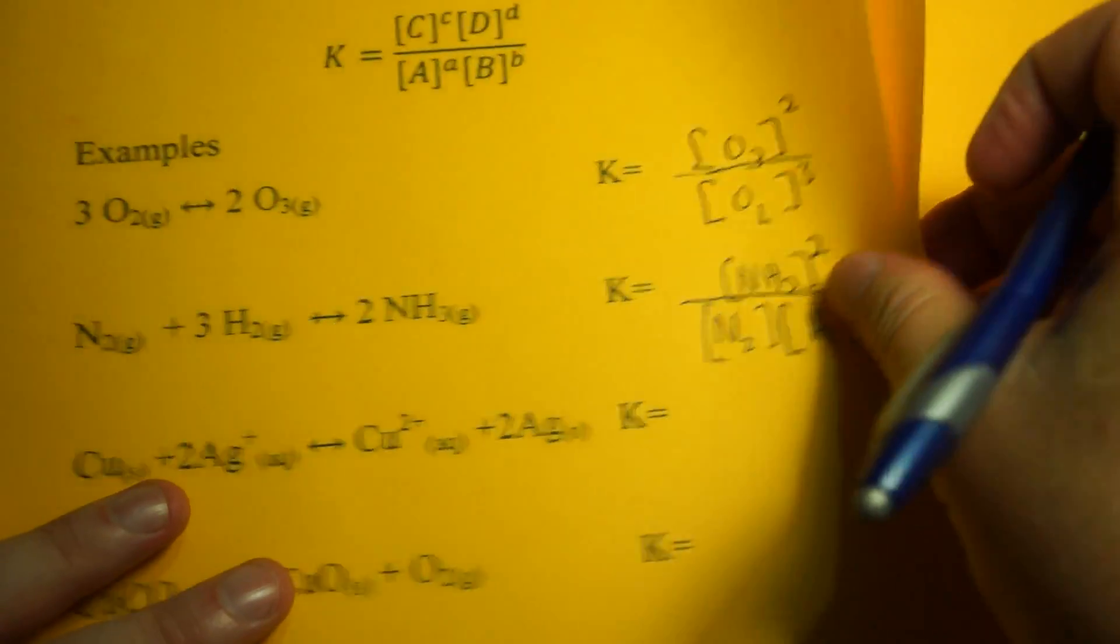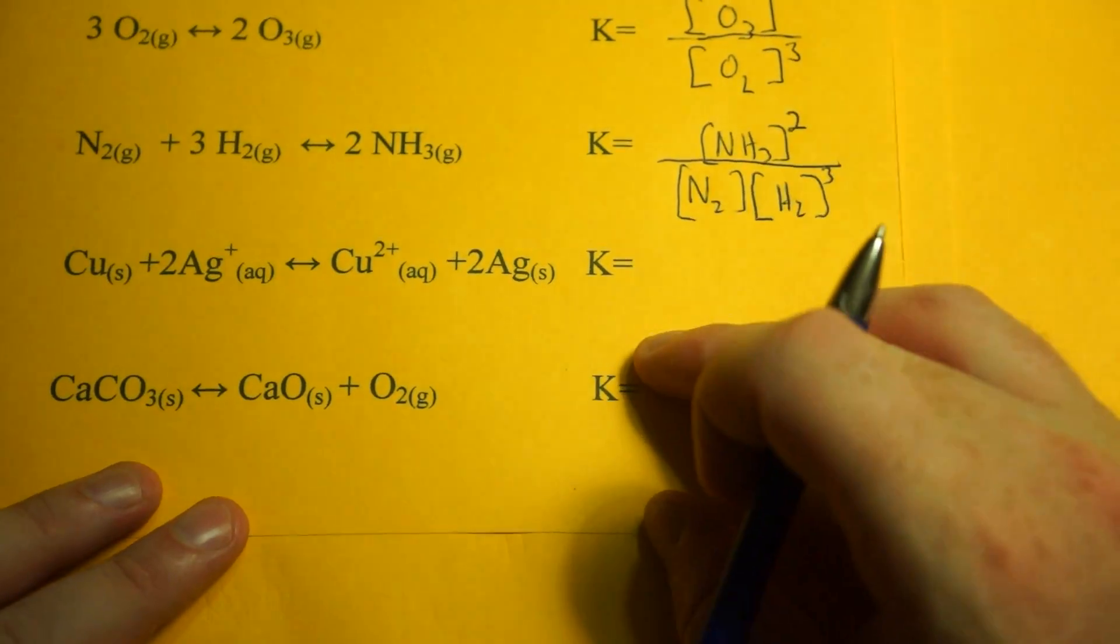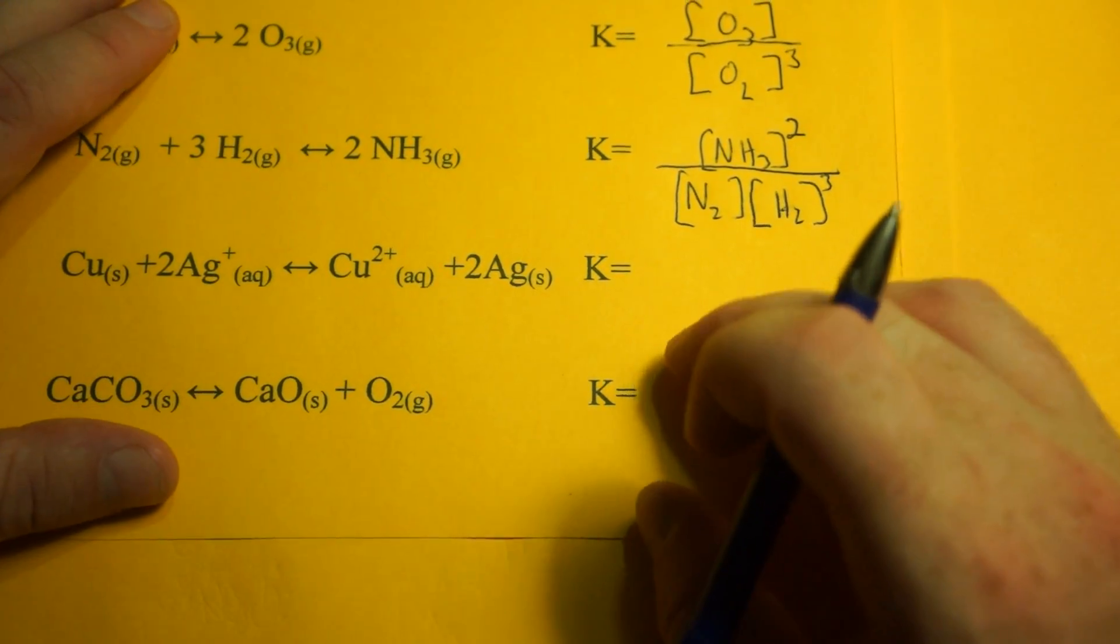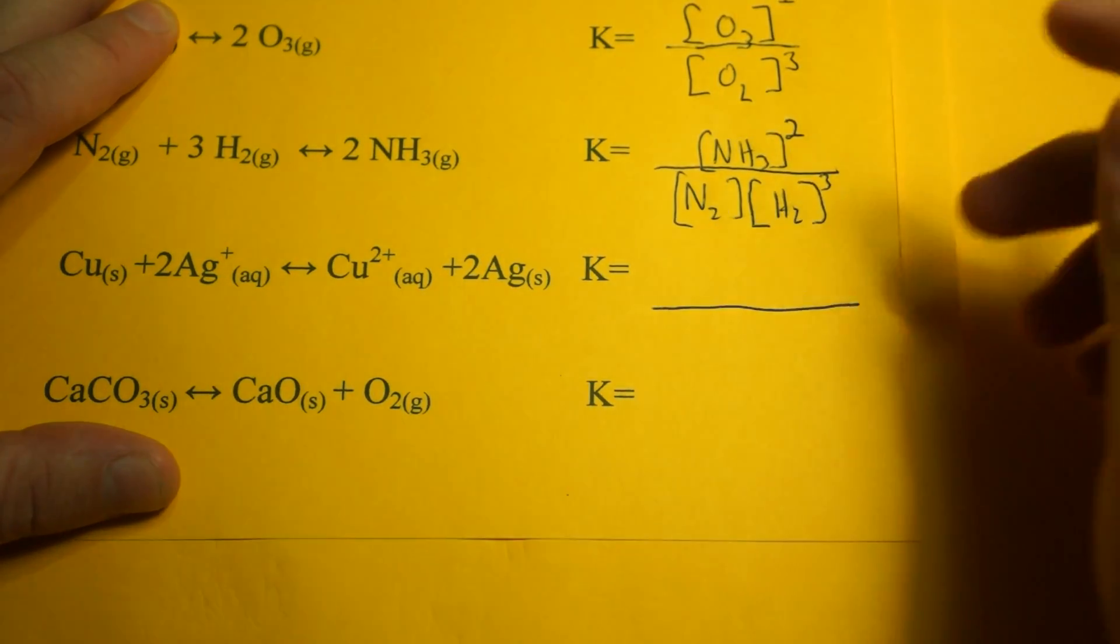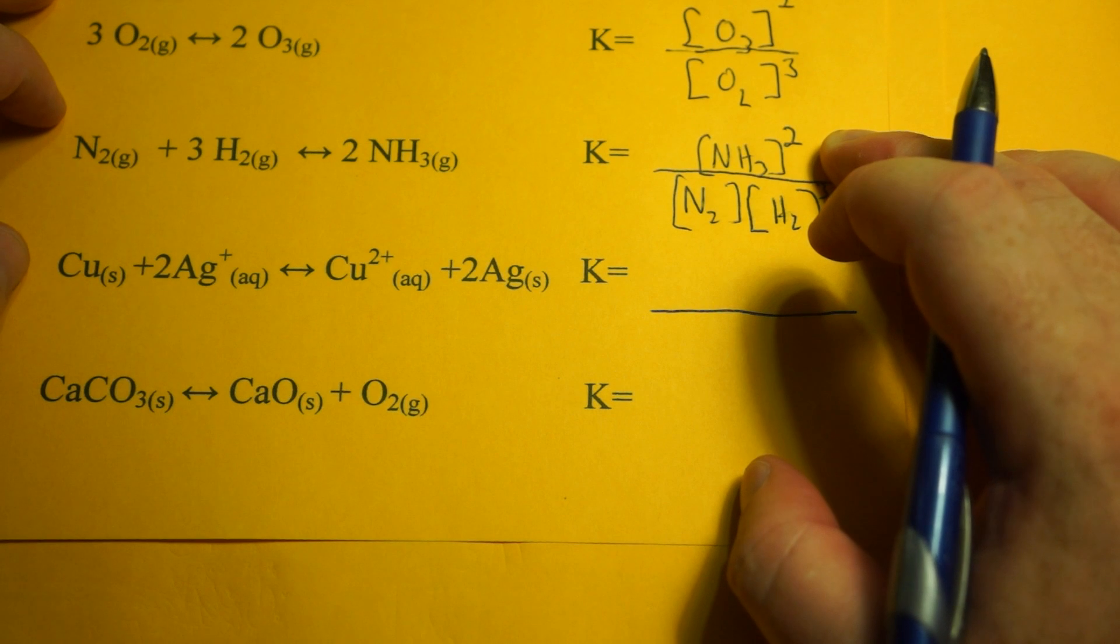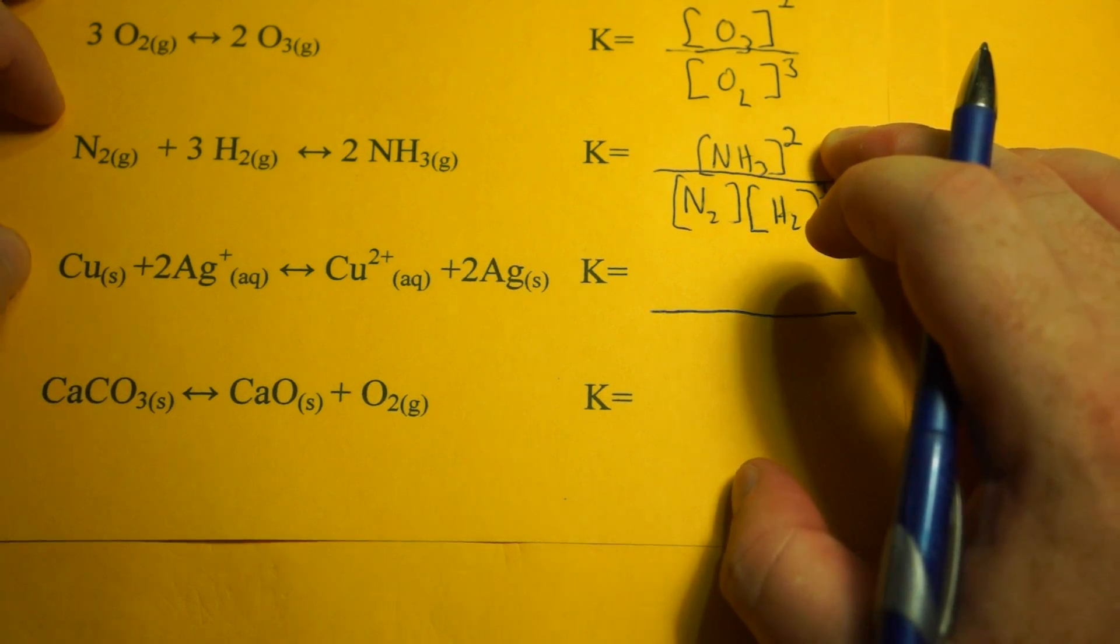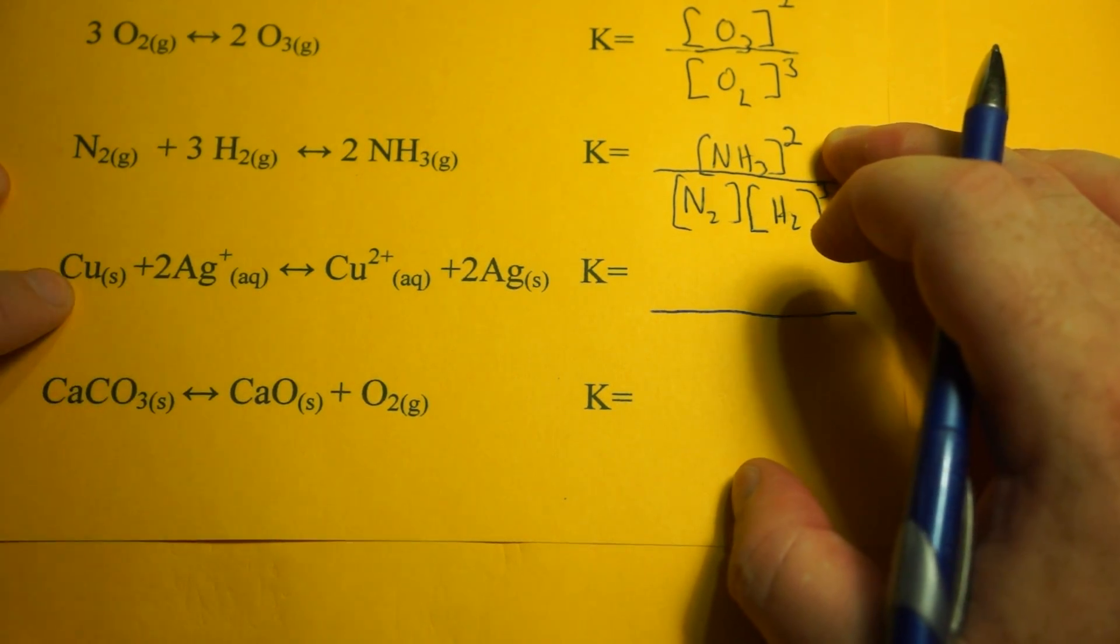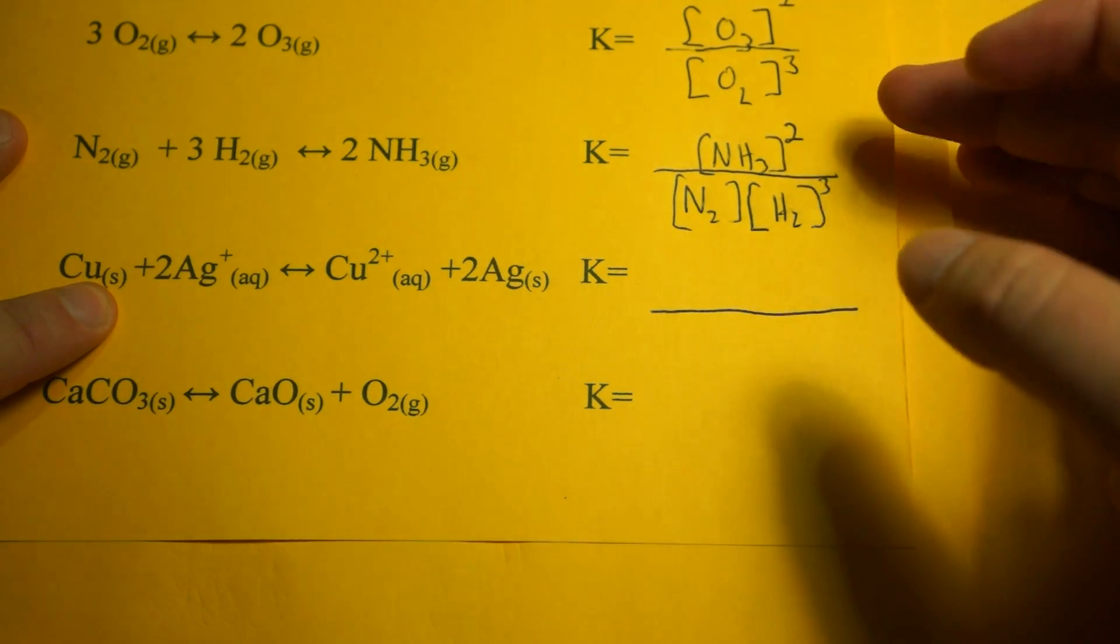Now those were gases, so all the species in the reaction have to be included. Remember, we exclude solids and pure liquids. This reaction here, which is a single replacement redox reaction, has solids involved, so we're going to exclude the solids.